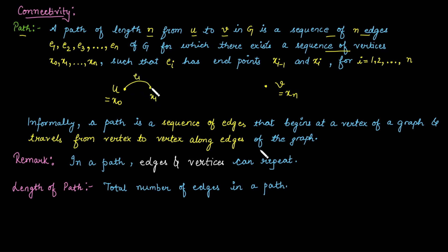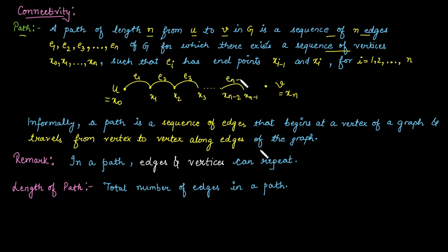To travel this path, we go from x_naught to x_1 by edge e_1, then from x_1 to x_2 by edge e_2, then x_2 to x_3 by edge e_3, and so on up to x_(n-1) to x_n by edge e_n. In general, a path is a sequence of edges that begins from one vertex and travels to another.